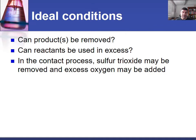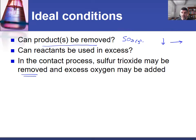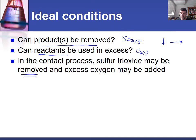We can also think about concentrations. Is there any way we can remove the products of this reaction? There is only one product — sulfur trioxide — and if we remove it, that decreases its concentration and therefore, by Le Châtelier's principle, encourages the reaction to shift to the right to replace the lost sulfur trioxide, hence increasing our yield. It's also possible for reactants to be used in excess; oxygen is the easiest to add more of, and as we increase its concentration, Le Châtelier's principle suggests the system will shift to the right and increase the yield.